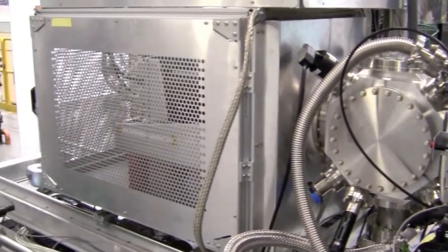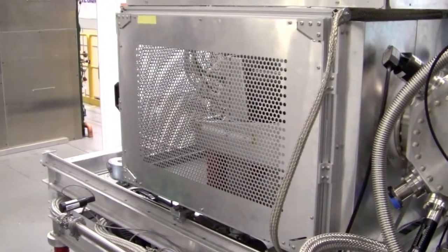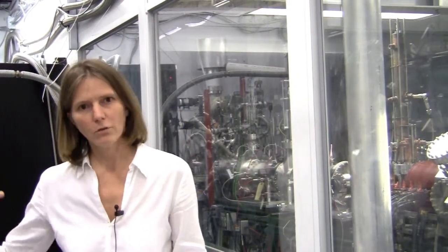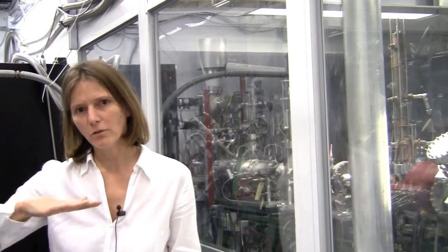So the rare isotopes coming from the cyclotron facility are traveling very fast when they are produced. There are many experiments that can use these fast isotopes, but there are also many experiments that need the ions at a very precise energy. So what we do is we bring the rare isotopes to a gas cell and slow them down to almost thermal speed, to completely stop them.